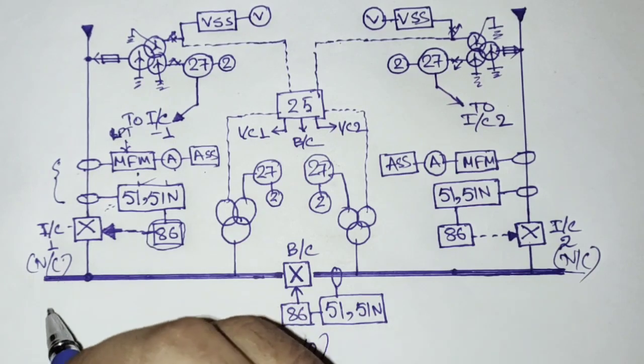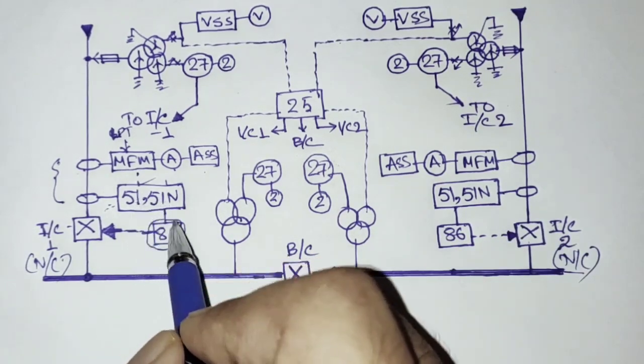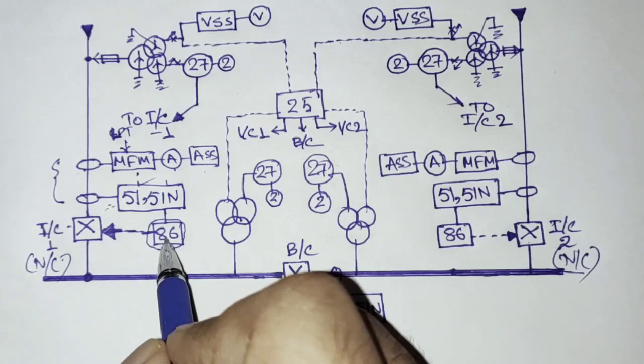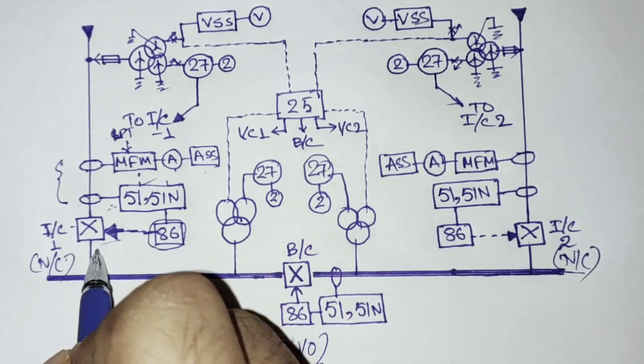86 is a lockout relay. It is basically a separate relay hand reset type. So these contacts are fed to another relay that is 86 and 86 contact is fed to the circuit breaker trip coil.